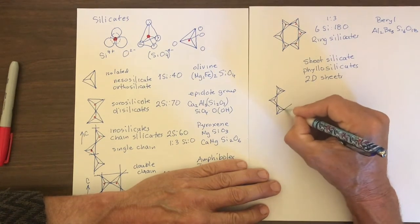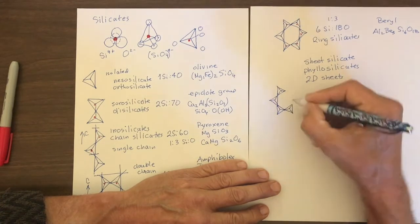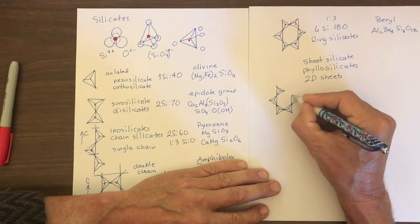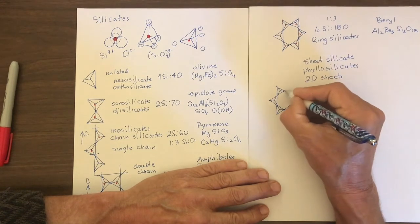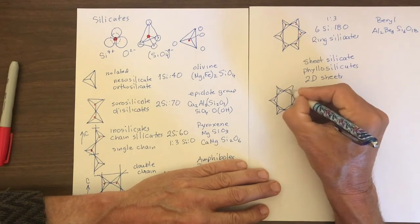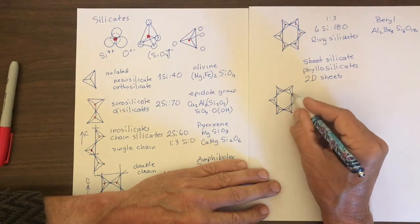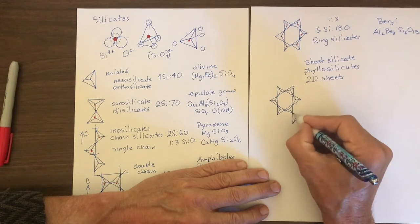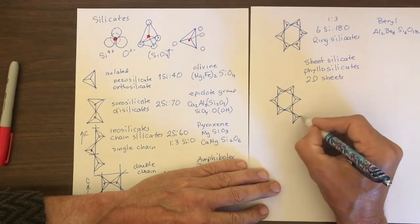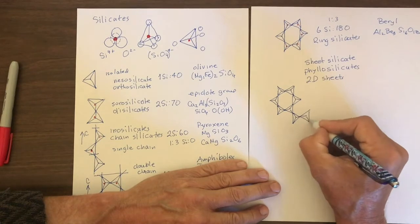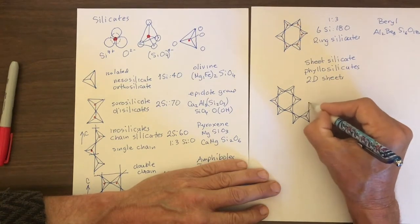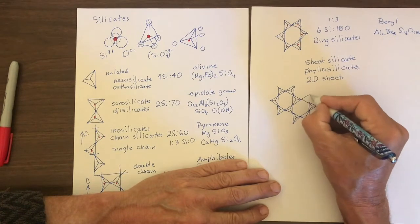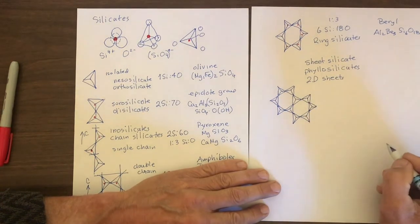And then over here, like that. And then we just repeat the pattern. So now this line here goes down and we have another tetrahedra. And then over here, another tetrahedra. And then over here, another tetrahedra. And here.